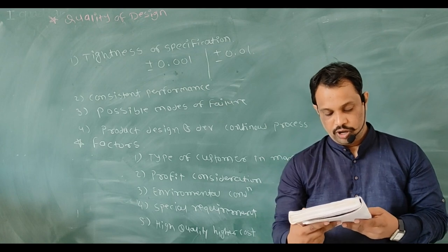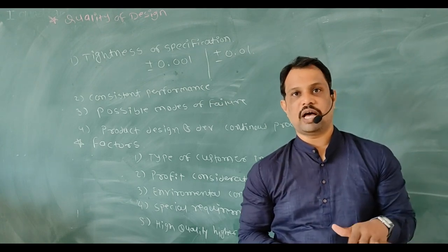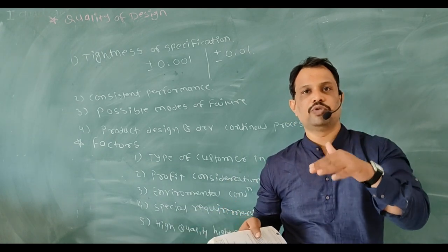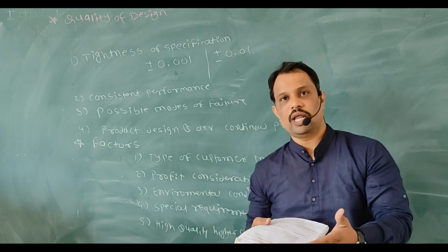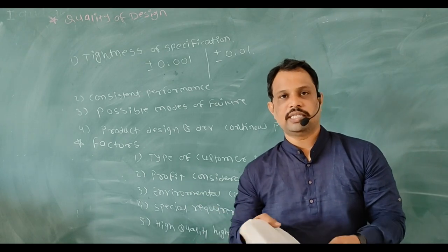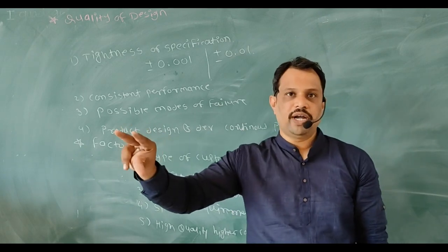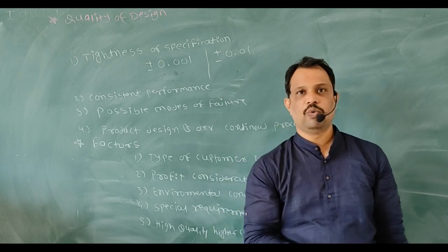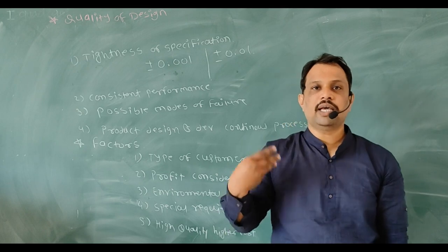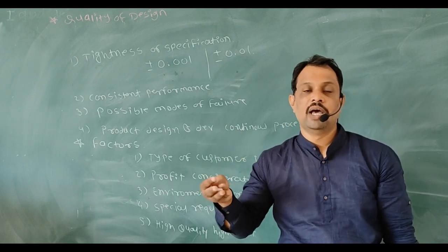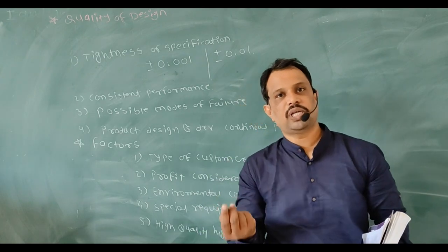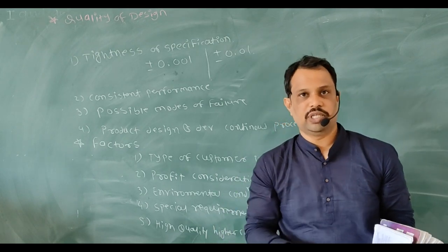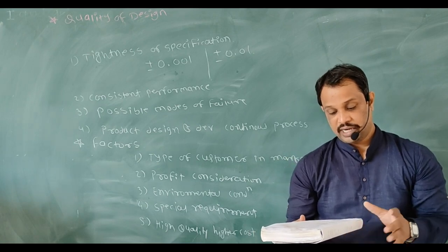Product design and development is a continuous process. For example, if there is a car, the first model comes out, and then after three or four months a second model arrives with some updates. Earlier cars had AC only at the front dashboard, but now newer cars have an AC duct for rear passengers as well. Companies learned this through market surveys and customer feedback about their products.